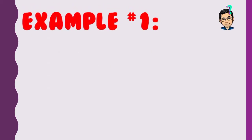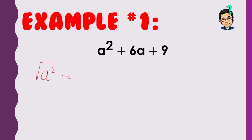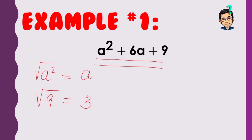Example 1: a² + 6a + 9. Square root of the first term a² is a. Square root of the last term 9 is 3. Check: a times 3 is 3a, times 2 is 6a — correct. Therefore, the factored form of a² + 6a + 9 is (a + 3)².